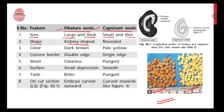Regarding shape, dhatura seeds are kidney-shaped — you can see the characteristic shape in the pictures. Capsicum seeds, on the other hand, are mostly round with just a slightly pointed or conical tip at one side. Regarding color, dhatura seeds are dark brown, whereas capsicum seeds are pale yellowish in color.